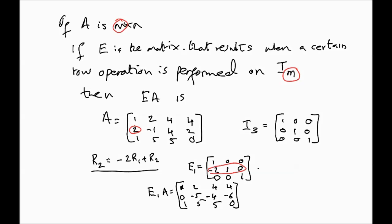Looking at this resulting matrix E1·A, if I were to perform the row operation directly on A — new R2 = -2·R1 + R2 — I get exactly the same result: zero, minus five, minus four, minus six in the second row. So multiplying by the elementary matrix is exactly equivalent to performing the row operation directly. You can continue multiplying by further elementary matrices E2, E3, and so on from the left to perform successive row operations and progressively reduce the matrix.